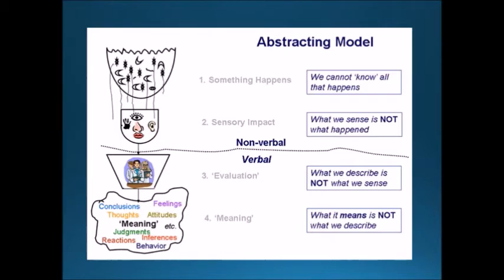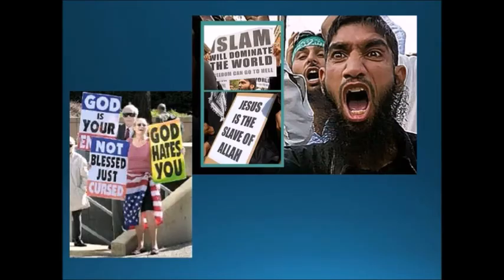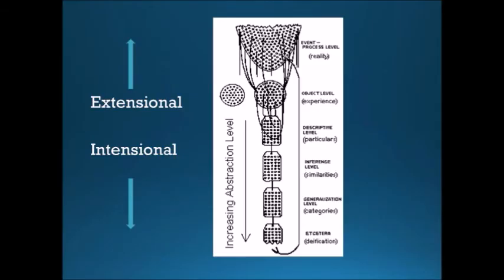Now we're going into the verbal level of abstraction. The fourth level is meaning: we infer, generalize, put things into categories, give meaning, come to conclusions, have an opinion, and verbalize it to each other — this is where we label. The key takeaway of this abstracting model is understanding the order of all these levels: the difference between reality outside of us, the sensory immediate experience, our evaluation and attitudes, and then the meaning we apply — how we verbalize and describe it to others.